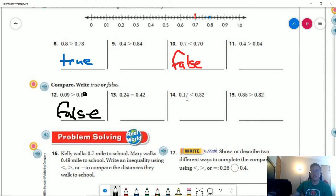Number fourteen: seventeen hundredths is less than thirty-two hundredths. Seventeen is smaller than thirty-two, so that is true.